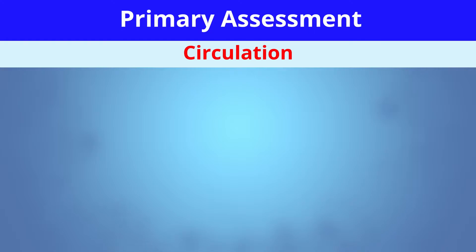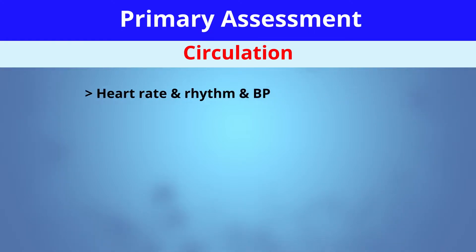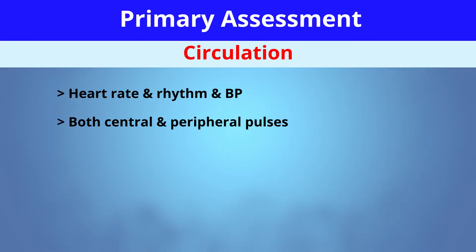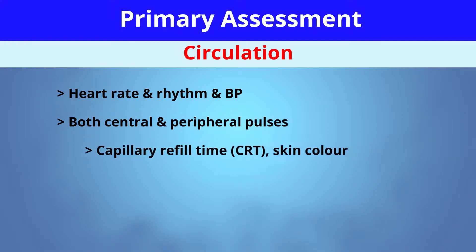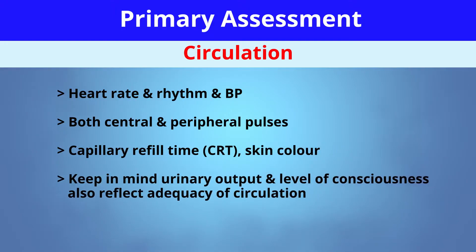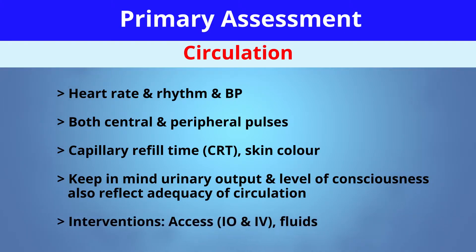Next, you'll move on to assessing their circulation. This is where you're going to assess their heart rate, their rhythm, and their blood pressure. You're going to assess both central and peripheral pulses, including cap refill time and skin color. Keep in mind that urinary output and level of consciousness also reflect adequacy of circulation. Interventions at this point may be access such as IO or IV, and administration of fluids.